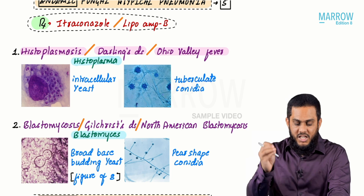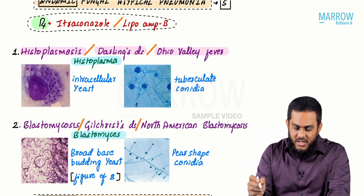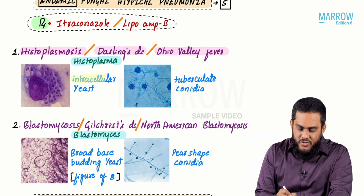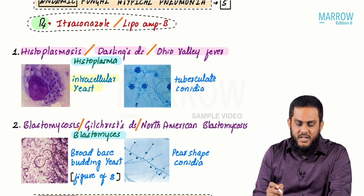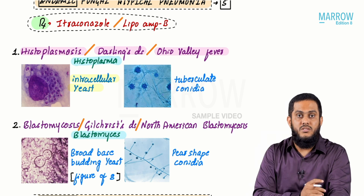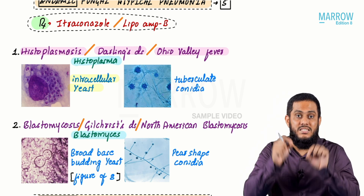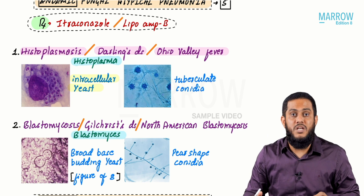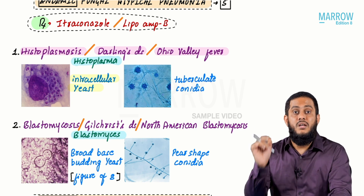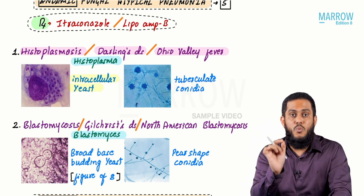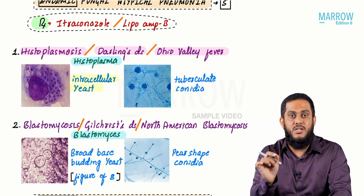The yeast form of Histoplasma is identified by seeing intracellular yeast — yeast found within the cell. Among all fungi, Histoplasma is the only intracellular fungus. So if yeast is found within the cell, it is 100% Histoplasma.